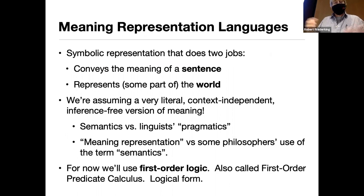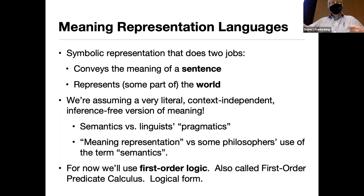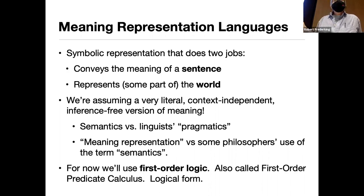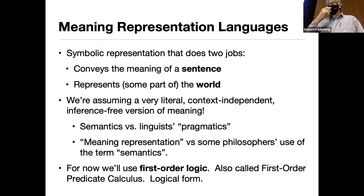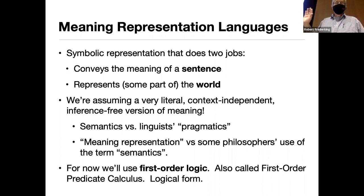When you're trying to produce the meaning of a sentence, you're typically trying to convey a representation of some part of the world. Linguistic people talk about pragmatics versus semantics: semantics is the specific meaning of a sentence taken very literally, whereas pragmatics refers to other things about the world you need to know to interpret the sentence. They draw a line there, which may or may not really exist, but you should understand that distinction.